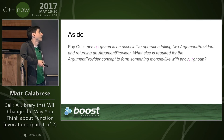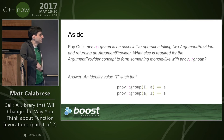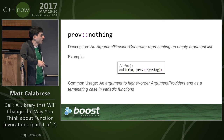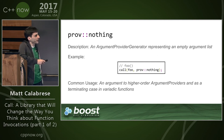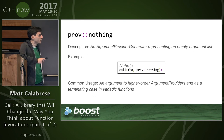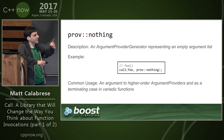prov::group is an associative operation taking two argument providers and returning an argument provider. What else is required for argument providers to form something monoid-like with prov::group? A unit — some identity value. That unit is 'prov::nothing,' which represents an empty argument list. So calling foo with prov::nothing generates an empty thing. This means there's a higher-order function where you can pass prov::nothing as one alternative and prov::value_of as another to get zero or one arguments from an optional.